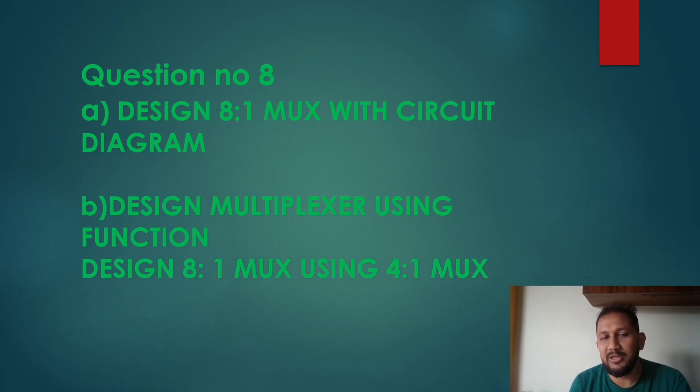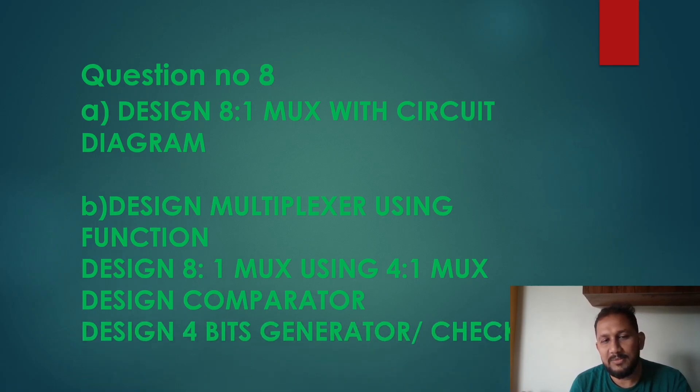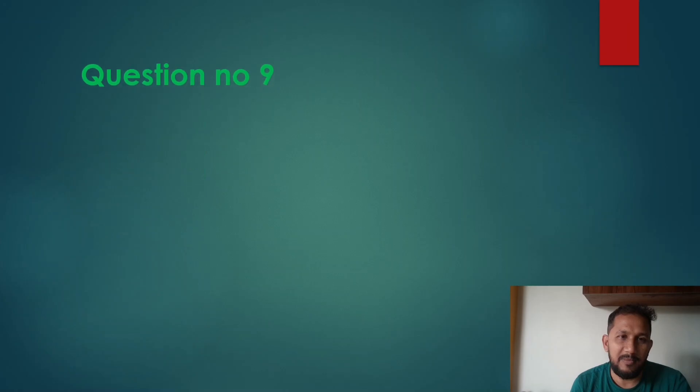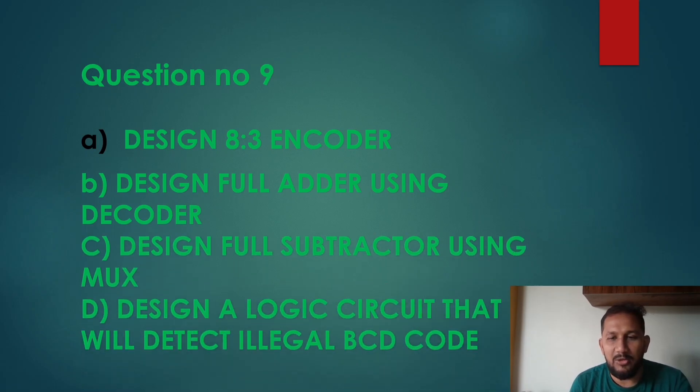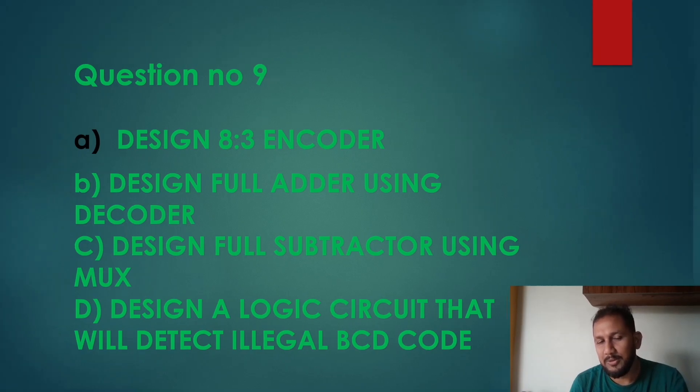Question number 8. Design 8-1 MUX using 4-1 MUX. Design comparator. Design 4-bit generator checker. Design 8-2-3 encoder. Design full adder using decoder. Design full subtractor using MUX. Design a logic circuit that will detect illegal BCD code.